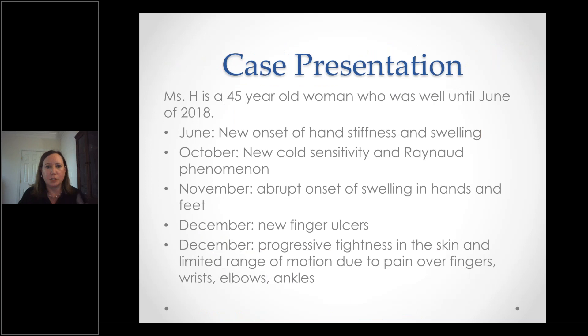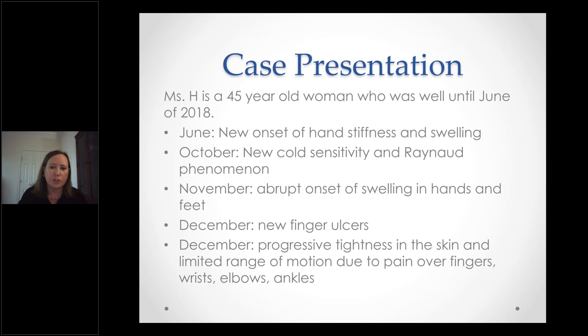I'm going to start with a case. This patient is a 45-year-old woman who was well until June 2018, where she developed new onset of hand stiffness and swelling, and subsequently developed a new sensitivity to cold and noticed her fingers started turning colors. This changed to abrupt onset of swelling in her hands and feet, then developed new finger ulcers. Over the next several months she developed progressive tightness in the skin and limited range of motion because of pain in her fingers and across joints like wrists, elbows, and ankles.